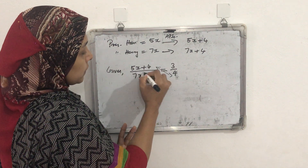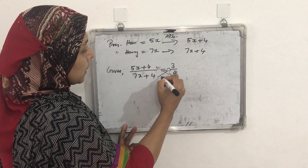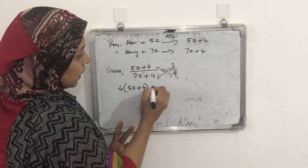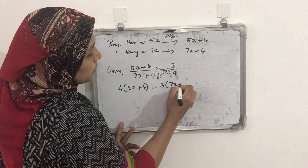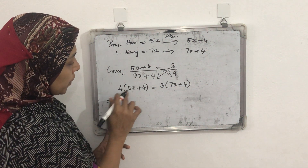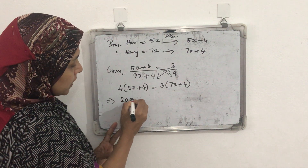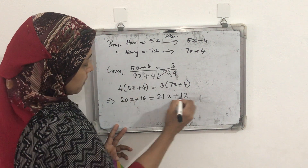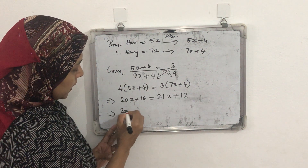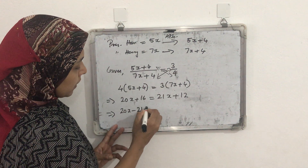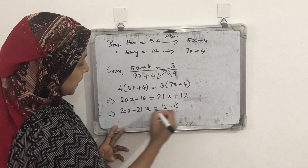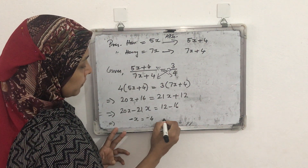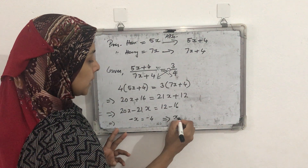4 multiplied with (5x + 4) and 3 multiplied with (7x + 4). So: 4 × (5x + 4) = 3 × (7x + 4), which gives 20x + 16 = 21x + 12. This implies 20x − 21x = 12 − 16, that means −x = −4.